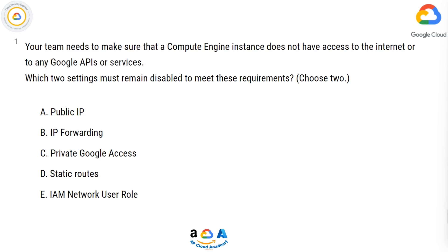A. Public IP. B. IP forwarding. C. Private Google Access. D. Static Routes. E. IAM Network User Role.